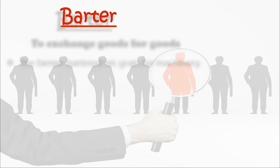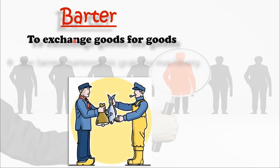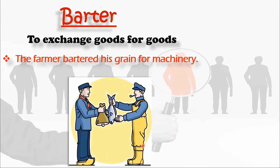The next word is barter, and this word is related to your business or occupation. Barter means to exchange goods for goods. Look at this picture and you will understand what I want to say. The sentence: 'The farmer bartered his grain for machinery,' meaning the farmer exchanged his grain for machinery.